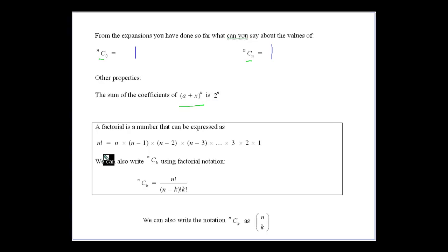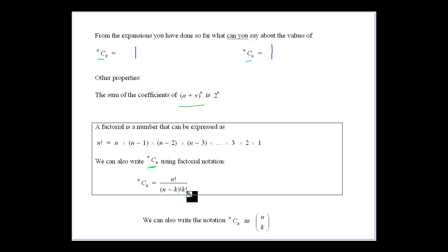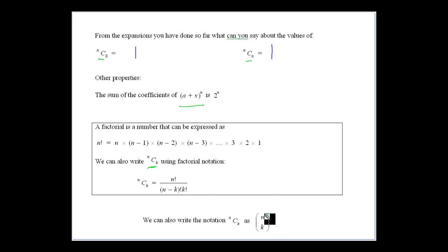We know that n factorial is n times (n−1) times (n−2) times (n−3) down to 1. The formula for nCk is n factorial over (n minus k) factorial times k factorial. That's the actual definition of nCk and where the calculation comes from. You can use the calculator's program to do that, and you'll also see it written as n choose k with brackets.